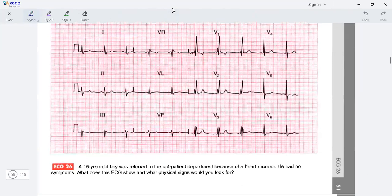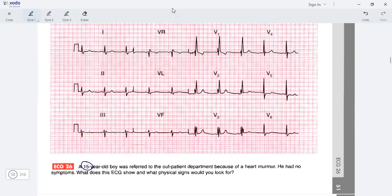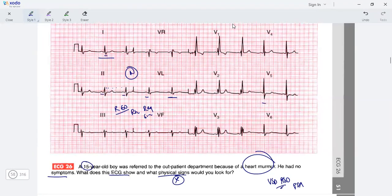Next is a 15-year-old boy with heart murmur, could be a VSD or ASD or PDA, no symptoms. The rate is around 60, normal. Rhythm is regular and sinus. Axis is normal. 2, 3, AVF is all right. 1 AVL has some slurring. V5 V6 show some ST depression. V1 to V4 show the RSR pattern.